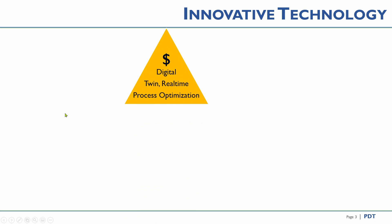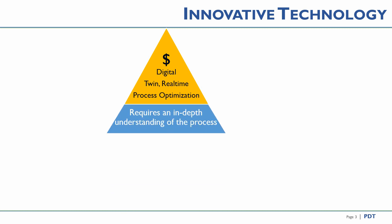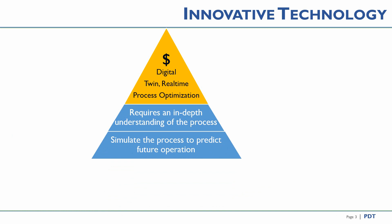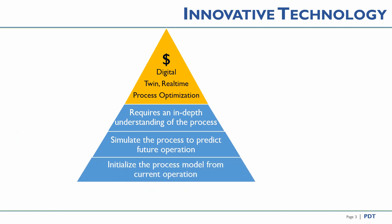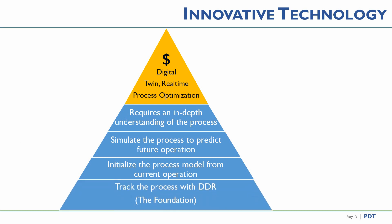The goal of a process digital twin is to first find the current state of the process and then optimize it. This requires a good process understanding, and that will not succeed without a good model. The best path to understanding is a simulation model, but there is a problem with initialization of a simulation model with the current process dynamic operation. RL has uniquely solved that initialization by tracking the process with a proprietary and reliable dynamic data reconciliation.